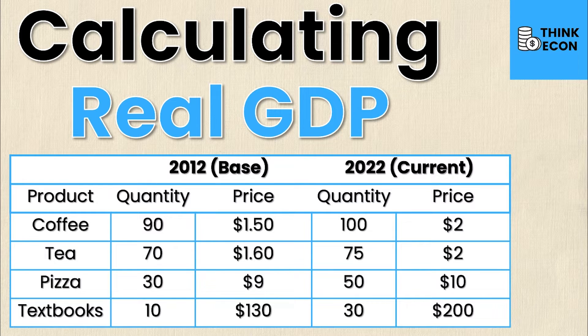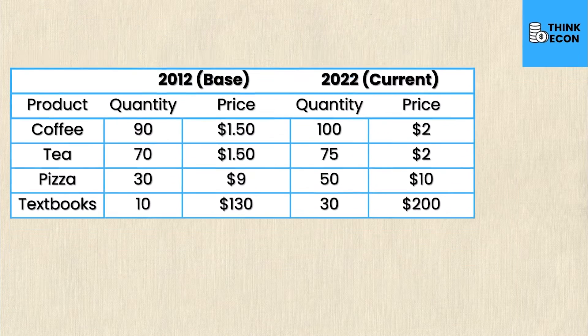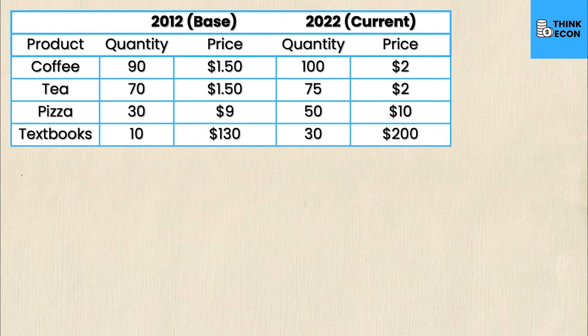To calculate real GDP you need to be mindful of two years: the year you want to calculate for, and something called the base year, which in our example is 2012.